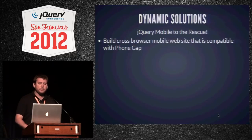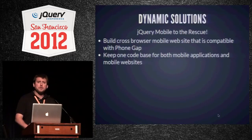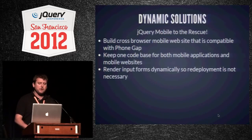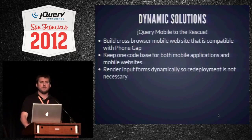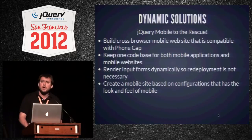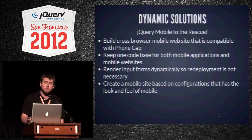jQuery Mobile allows us to build a cross-browser website that is compatible with PhoneGap. We're able to keep one code base for both the mobile applications and the mobile websites. At the city we check whether we're running inside a browser or inside PhoneGap and have differences in the code accordingly. jQuery Mobile also gives us the ability to render input forms dynamically so redeployment is not necessary, and it allows us to create a mobile site with the look and feel of mobile — important because we don't want enterprise-style forms.